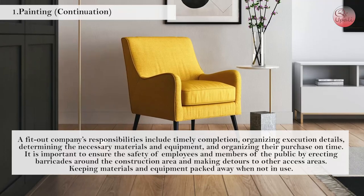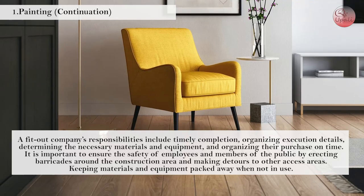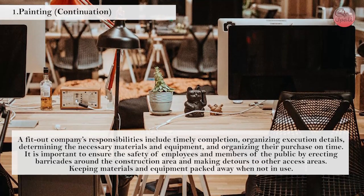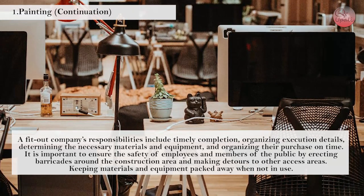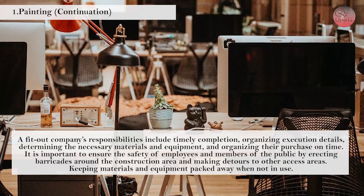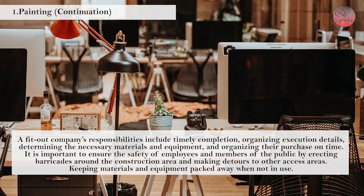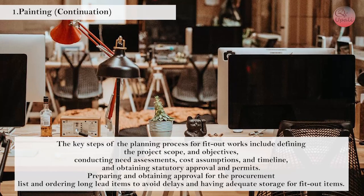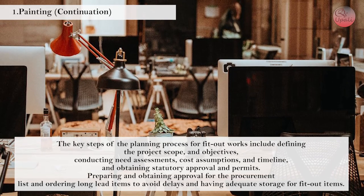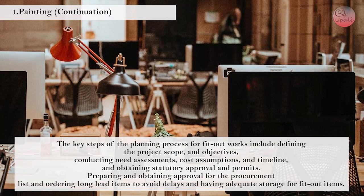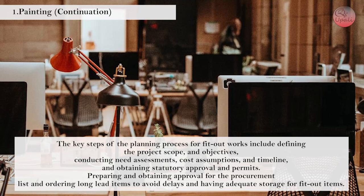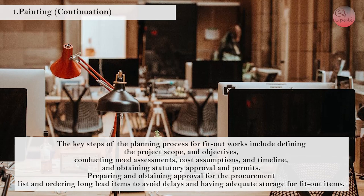A fitout company's responsibilities include timed completion, organizing execution details, determining the necessary materials and equipment, and organizing their purchase on time. It is important to ensure the safety of employees and members of the public by erecting barricades around the construction area and making detours to other access areas, keeping materials and equipment packed away when not in use. The key steps of the planning process for fitout works include defining the project scope and objectives, conducting needs assessments, cost assumptions, and timeline, obtaining statutory approval and permits, preparing and obtaining approval for the procurement list, and ordering long-lead items to avoid delays, and having adequate storage for fitout items.